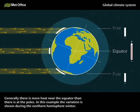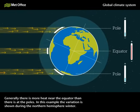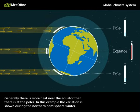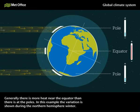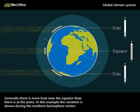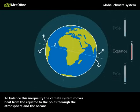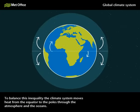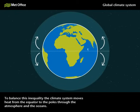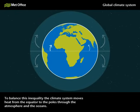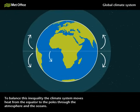Generally, there is more heat near the equator than there is at the poles. In this example, the variation is shown during the Northern Hemisphere winter. To balance this inequality, the climate system moves heat from the equator to the poles through the atmosphere and the oceans.